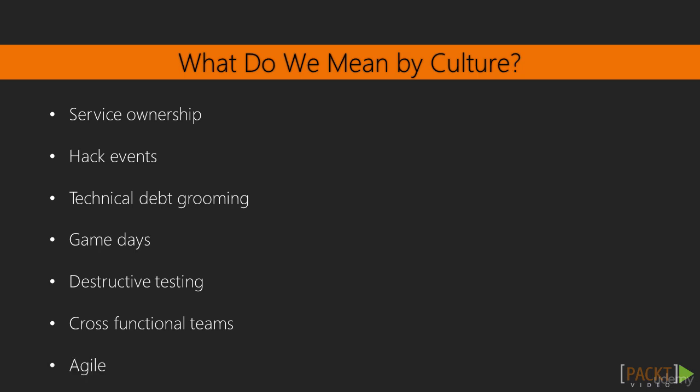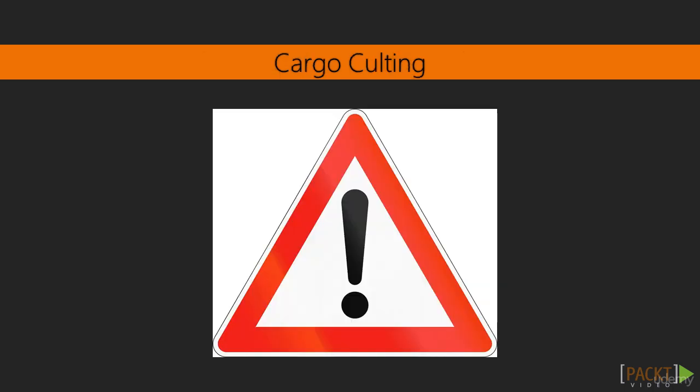Agile could be an element of our culture. Do we do Scrum? Do we do Kanban? Do we do retrospectives, learning reviews, blameless post-mortems? We understand that being able to learn and get better can be part of our culture. But there's a danger called cargo culting. We can't just look at what people at Amazon or Google are doing and copy those things just because they do them. We actually have to understand why we're doing these things, incorporate them into our culture, and live them. Merely going through the motions won't get us there.